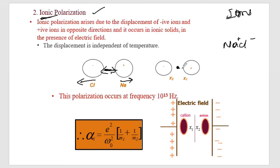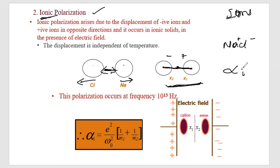Let X1 be the distance moved by the positive charge and X2 be the distance moved by the negative charge. We will now calculate the ionic polarizability alpha_i. Notably, ionic polarization is independent of temperature.